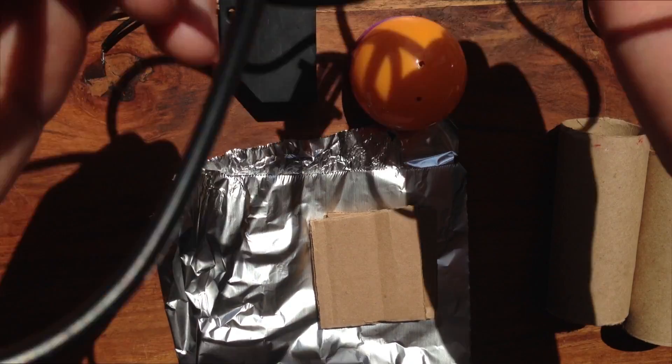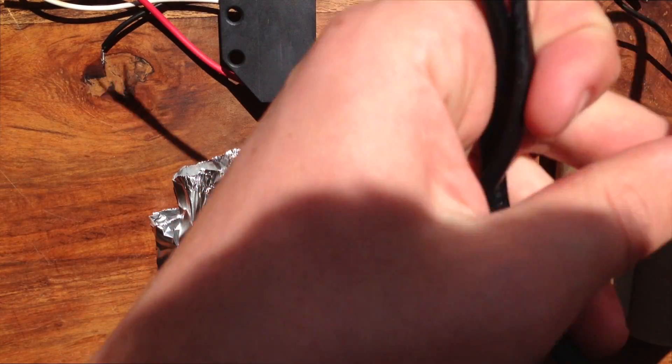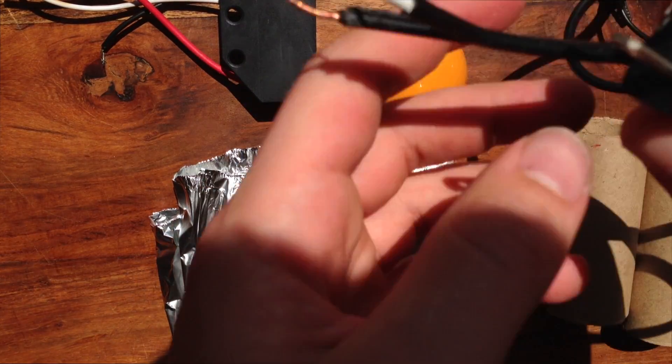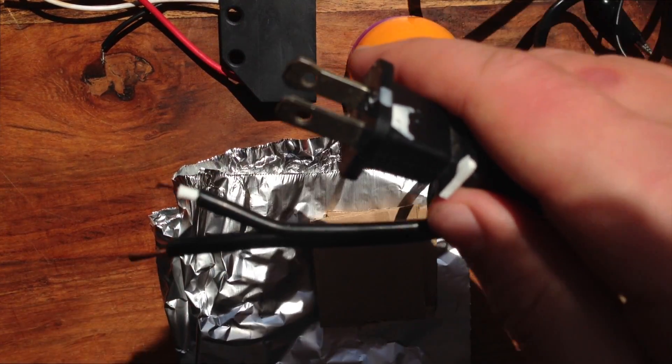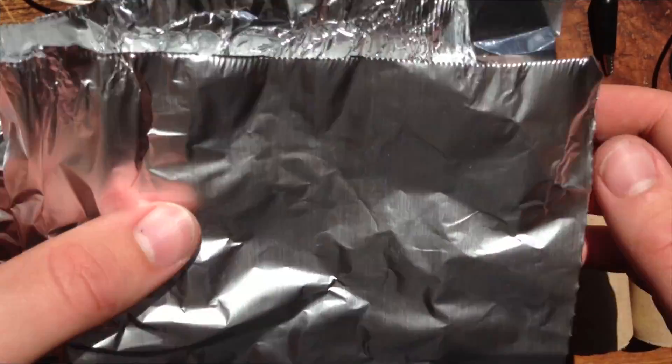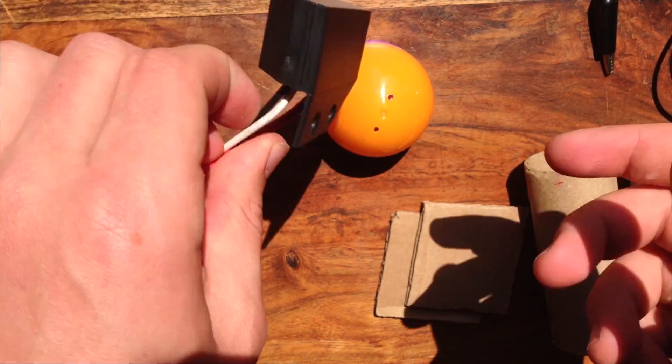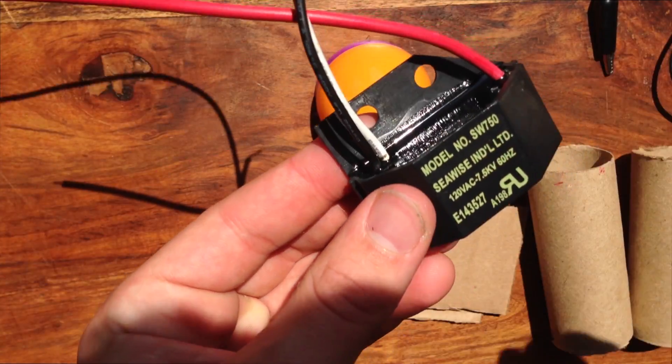So for materials, you're going to need a stripped-off AC power cord. You can use the cord from any old AC-powered appliance. You're also going to need about a square foot of aluminum foil, this ion generator, there's a link in the description, and it costs around $10.